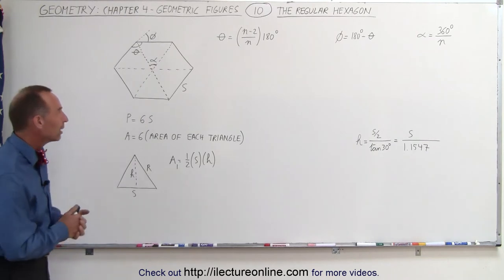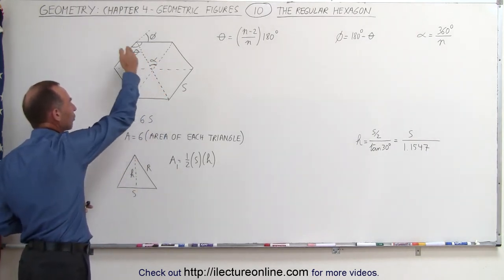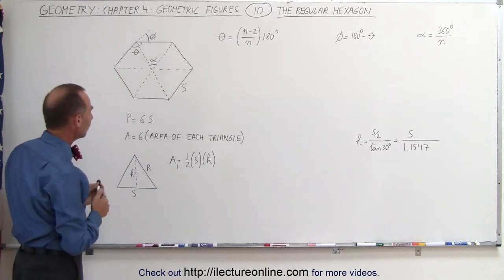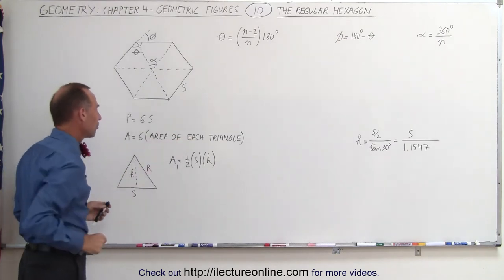We'll use the same technique as we did for the hexagon. In this case, we're going to divide the hexagon into six similar triangles, and therefore the area will be equal to six times the area of each of the triangles.